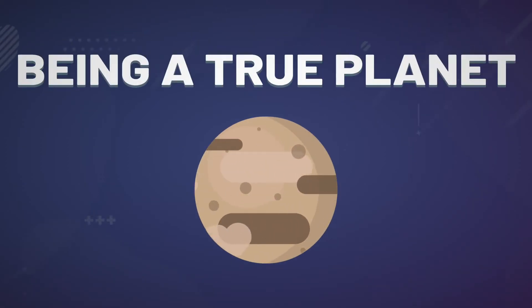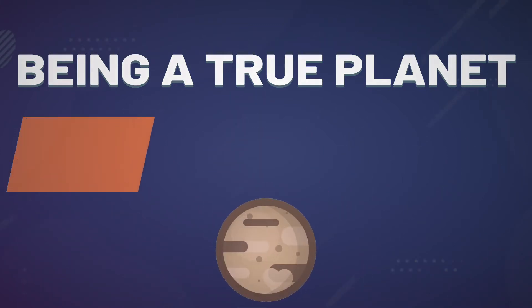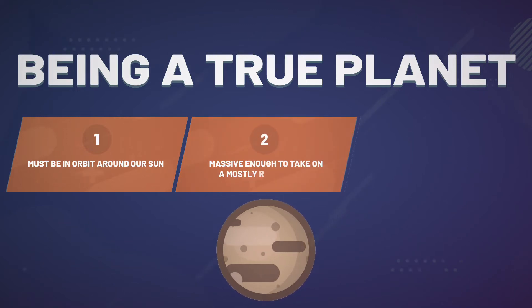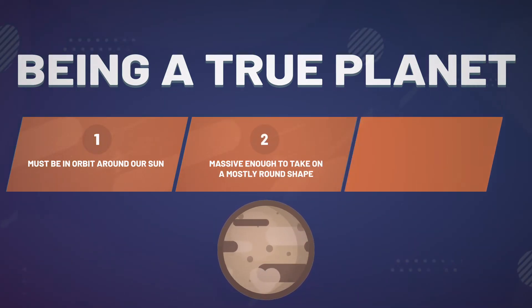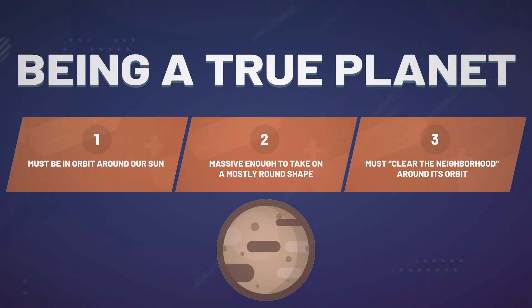To be considered a full planet, a body must meet three rules. It must be in orbit around our sun. It's massive enough to take on a mostly round or spherical shape. It must clear the neighborhood around its orbit.